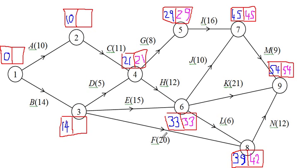For three: F takes twenty, so we must have left three by twenty-two in order to be at eight by forty-two at the latest. But we've got to be at six by thirty-three, meaning we must leave three at eighteen in order that E can finish by thirty-three. But we've also got to be at four by twenty-one - the only way we can be at four at twenty-one is if we start at sixteen. So sixteen is the latest possible time we can be at three; any later and we delay either four, six, or eight. Number two must be there by ten because C takes eleven and we've got to be at four by twenty-one. And because we've got to be here by ten, we must start the project at zero.